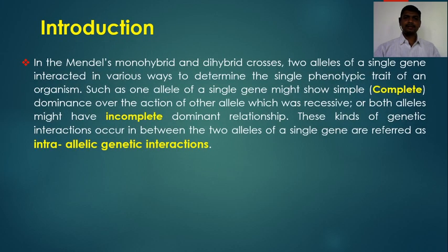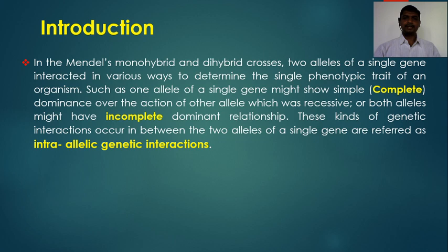In the previous chapter we studied Mendel's monohybrid and dihybrid crosses. A monohybrid cross is made for a single pair of contrasting characters, for example a cross between tall and dwarf plants. A dihybrid cross is made for two pairs of contrasting characters, for example a cross between yellow round and green wrinkled seeds.